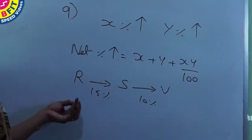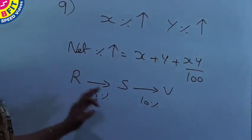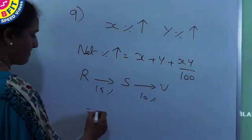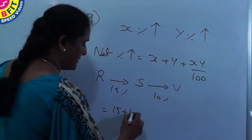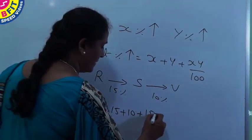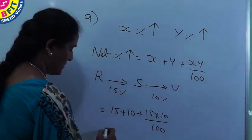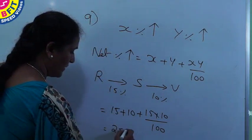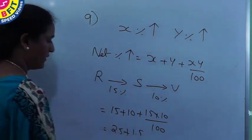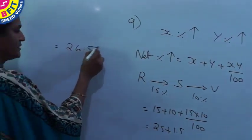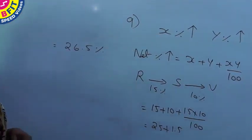So substituting for X as 15 and for Y as 10, you get the net increase as 15 plus 10 plus 15 into 10 by 100, which is equal to 25 plus 1.5. So the net profit percent is 26.5 percent.